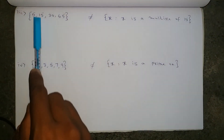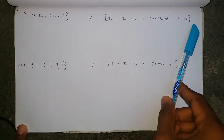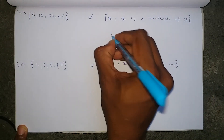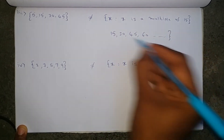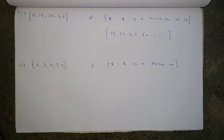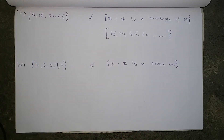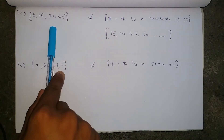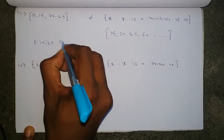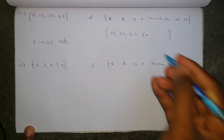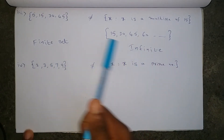Next, the first set is {5, 15, 30, 45} — four elements — and the second set is X such that X is a multiple of 15, giving 15, 30, 45 and so on. First, element 5 is in the first set but 5 is not a multiple of 15, so it is not in the second set. Second, the first set has only four elements — it is a finite set — whereas the second set has infinite elements. A finite set and an infinite set can never be equal to each other.